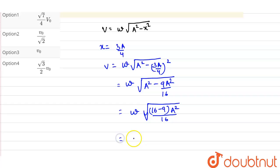So this will be equals to omega under root of 7A square upon 16.